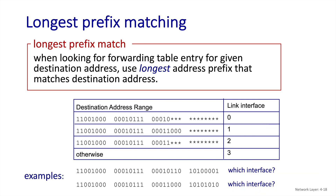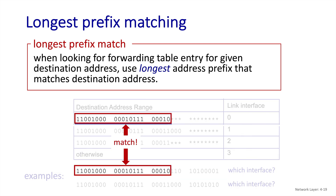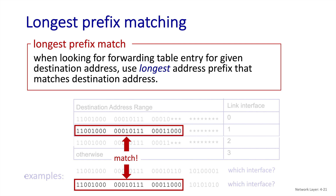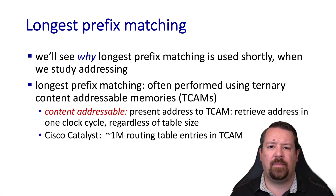In these two examples, we can see the first datagram destination address is only a match for the first prefix, so it will be forwarded out interface 0. The second example destination address is a match for both the second and the third prefix. But because the second prefix is the longer one, that is the one that will be used to make the forwarding decision, so the second example will be forwarded out interface 1. Note that for the bits that are specified in the prefixes, they must match exactly. We're not doing a closest match or similarity match or anything like that; the prefix must be an exact match. We'll keep coming back to this idea of longest prefix matching as we learn more about IP addressing.